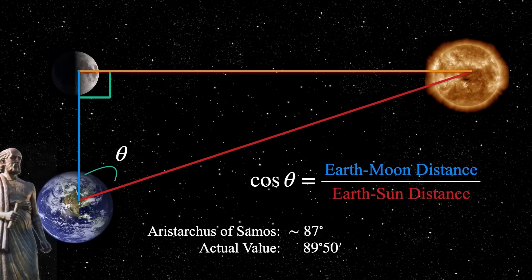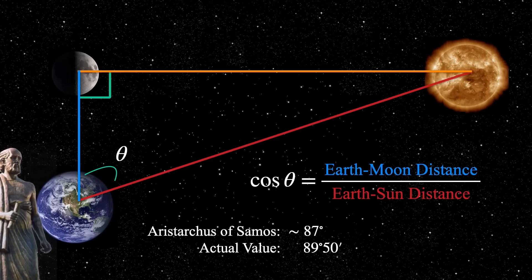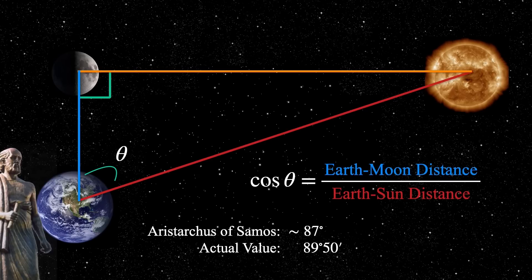So remember, your thumb held at arm's length is about a degree. So he used a similar method or something more accurate than that. But he got about 87 degrees between the moon and the sun in the sky. The real angle is about 89 degrees and 51 minutes.